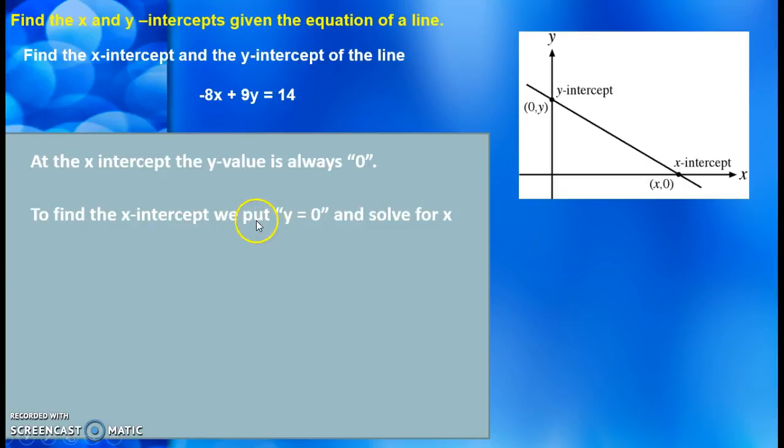So to find the x-intercept, we choose y equal to zero and solve for x. Put y equal to zero and we're left with -8x = 14. Divide by -8 and x = 14/-8. And in simplest form, this is -7/4. And Alex likes you to write your answers in fractional form for these topics.